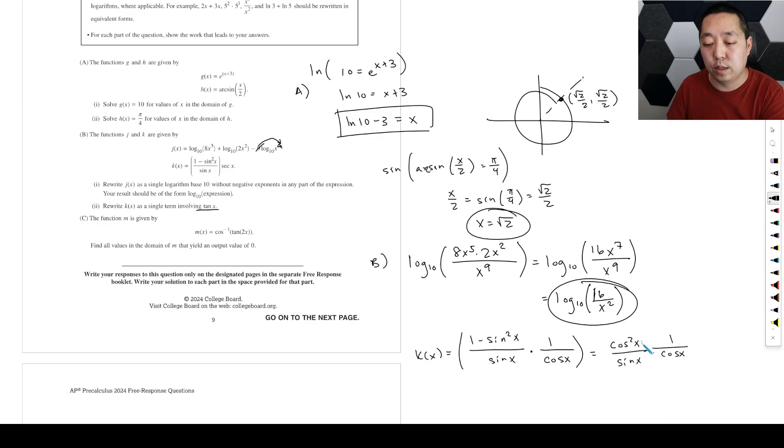Or sorry, cosine of x on the bottom. That will cancel that. And now I have cosine of x over sine x. Now tangent is sine over cosine. So this is like 1 over sine x over cosine of x, which we can write 1 over tan x.